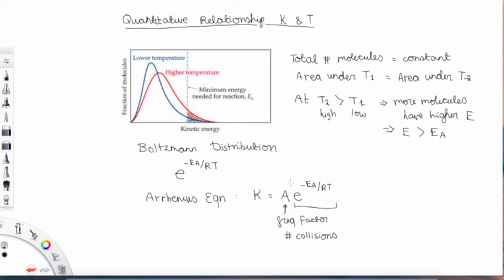And so when we get this equation, we can also take the natural log of each side. And we get ln K equals negative Ea over RT plus ln A. The reason why I moved the natural log of A to the other side is because now I can show you that this looks like y equals mx plus b.